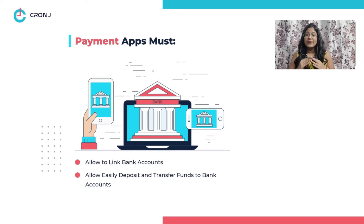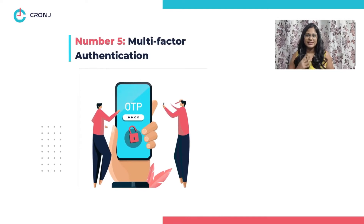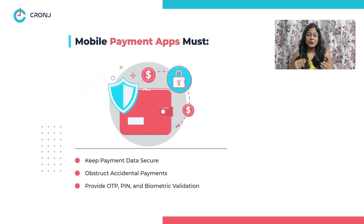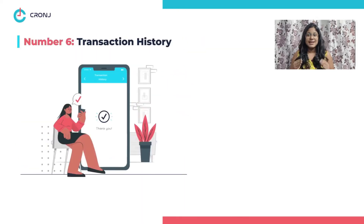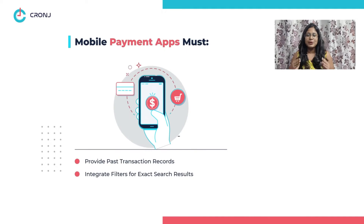Number five: multi-factor authentication. To ensure that users' payment data remains secure and that they do not make accidental payments, your app must provide OTP, PIN, and biometric validation. Number six: transaction history. Your app must also provide an immutable record of users' past transactions.